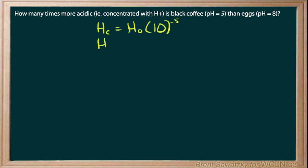So the concentration of the eggs is much the same—base concentration, 10 to the—and our pH here is eight. So we'll put a minus eight in there.